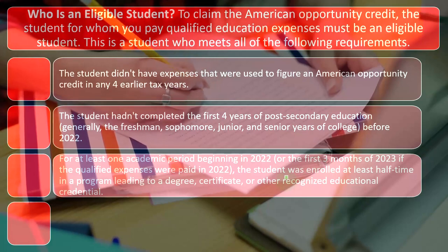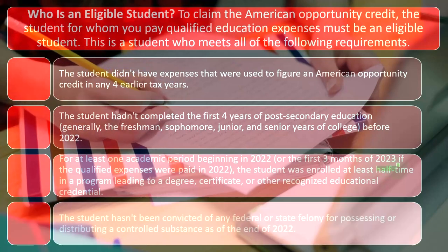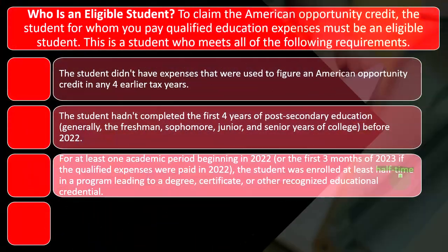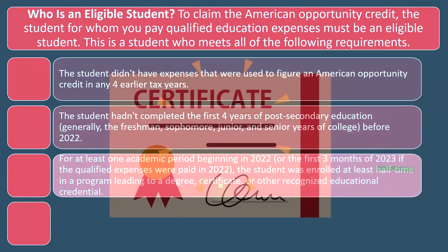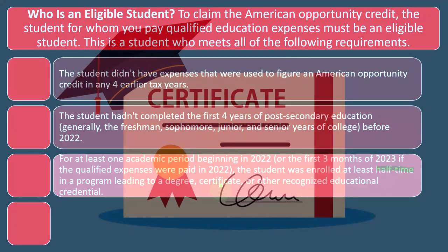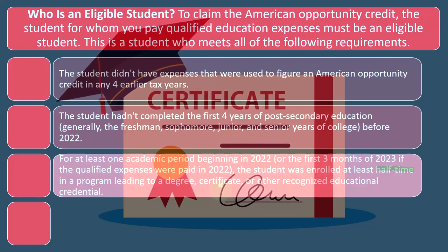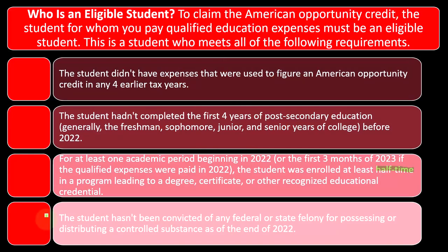In that situation, the student was enrolled at least half-time. What constitutes half-time is another key term you'll need to confirm with the educational institution — specifically how many courses are required. This must be in a program leading to a degree, certificate, or other recognized educational credential. Usually that's what you're doing at the school: working towards some kind of degree or certificate. You want to make sure that is fulfilled in terms of the purpose of the school.